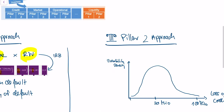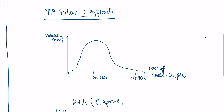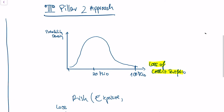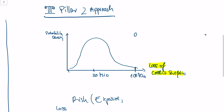The Pillar 2 approach works a bit differently, and for this we need a bit of statistics. What you see here is the so-called probability density function. This function shows the probability for the loss of your entire credit portfolio. Within this credit portfolio, you can see that a loss of $20 million within the next year is rather probable, while a loss of $100 million is rather improbable.